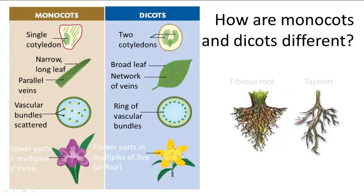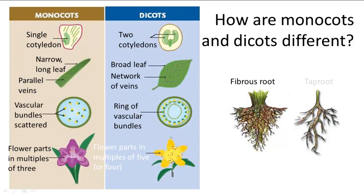So this is an outer ring of vascular tissue, and this is an inner ring — that was badly drawn — of vascular tissue. Monocots also have flower petals in multiples of three with fibrous root systems, and dicots have flower petals in multiples of four or five with a tap root system.